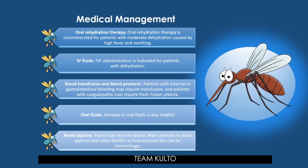Medical management of DHF is straightforward as long as it is detected early. Treatment includes: oral rehydration therapy for patients with moderate dehydration caused by high fever and vomiting; IV fluid administration for patients with mild to severe dehydration; blood transfusion and blood products (including fresh frozen plasma for coagulopathy) for patients with internal or gastrointestinal bleeding. Importantly, avoid aspirin and NSAIDs — they thin the blood and increase hemorrhage risk.